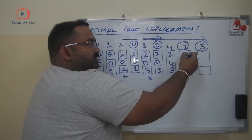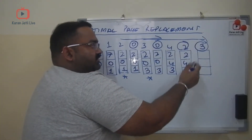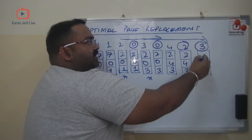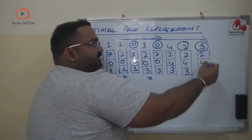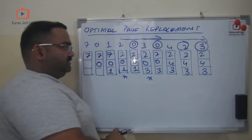Then 2 is already there — cache remains 2, 4, 3. Then 3 is already there — cache remains 2, 4, 3.